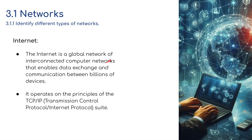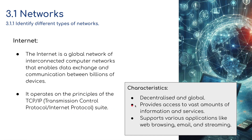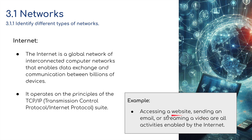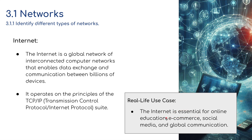The internet is a global network of interconnected computer networks — we've just described it as a WAN — that enables data exchange and communication between billions of devices. It operates on the principles of TCP/IP: Transmission Control Protocol and Internet Protocol suites. It is decentralized and global, provides access to vast amounts of information and services, and supports various applications like web browsing, email, and streaming. Accessing a website, sending an email, or streaming a video are all activities enabled by the internet. The internet is essential for online education, e-commerce, social media, and global communication.